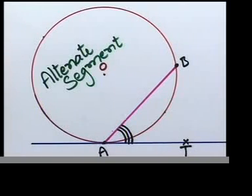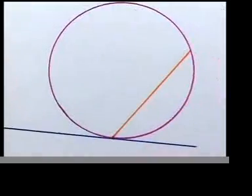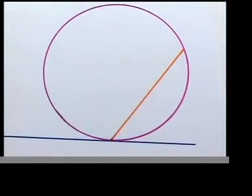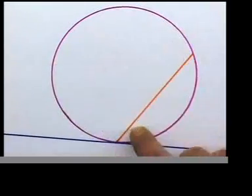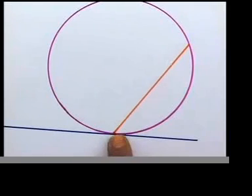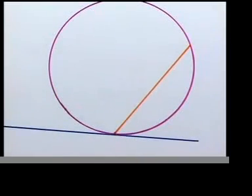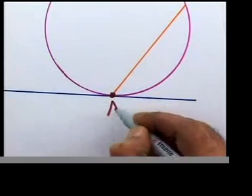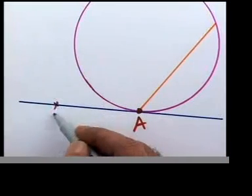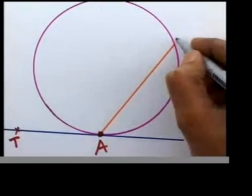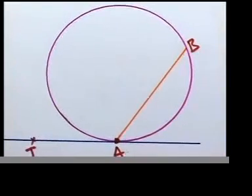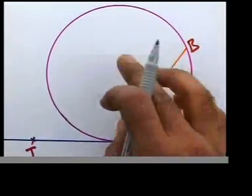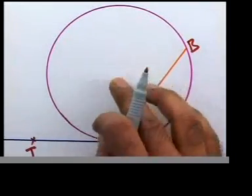Let's go to page three. On page three you'll see a similar question. We have a tangent, a circle, and a chord. The chord starts from the point of contact. Let's call the point of contact A and the tangent AT. AB is the chord. I want you to do something practical to see exactly what is going to happen here.